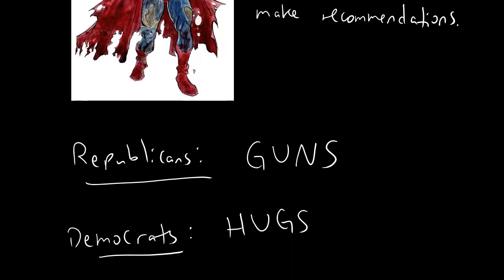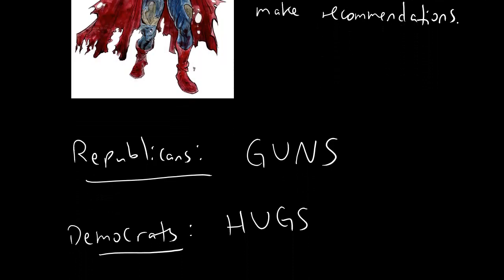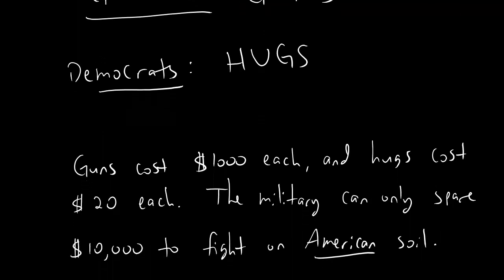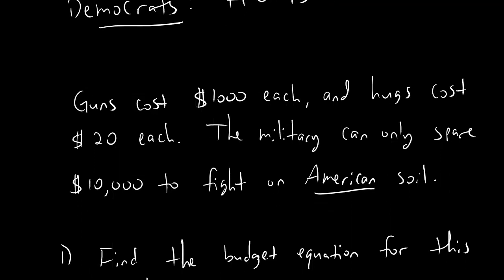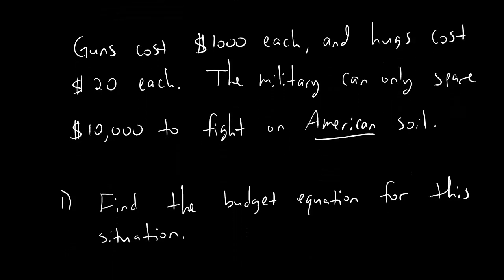How about the Democrats? I bet they've got a good idea. Oh, let's give him hugs. All zombie Superman needs is hugs. Congratulations, Democrats. Now we're all going to get eaten, and it's all your fault. Well, it looks like nobody's happy, but we're going to go ahead and go with some sort of hybrid Republican-Democrat problem. So we're going to be both making guns and making hugs. And the problem, people, is this. Guns cost $1,000 each. Hugs cost $20 each. And we only have a budget of $10,000, because this is a war on American soil. And if there's one thing the United States chucks its money at, it's wars that are somewhere else. So we've got $10,000 to fight this thing.